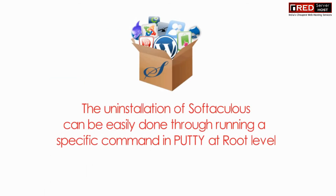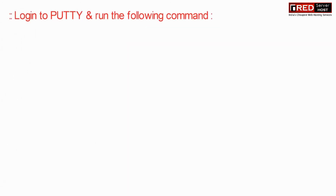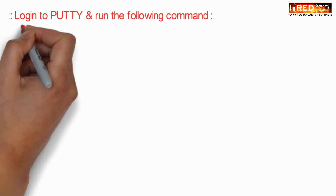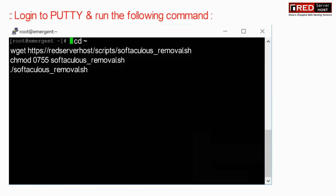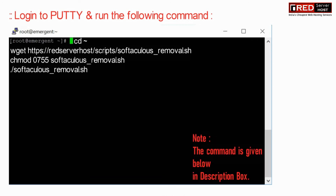The uninstallation of Softaculous can also be easily done using a specific command in PuTTY. Therefore, login to PuTTY and then run the following command as root level. This command is also given in the description box.